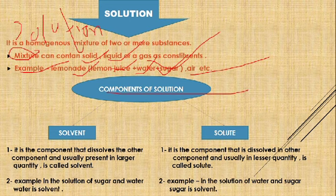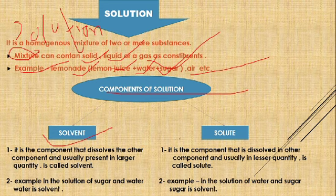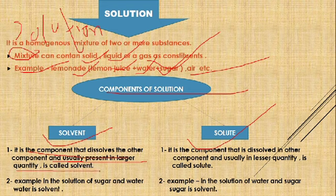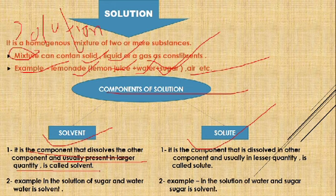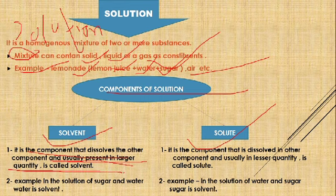The components of a solution are solvent and solute. The solvent is the component that dissolves the other component. For example, in a solution of water and salt, water is the solvent and salt is the solute. The solvent is usually present in the larger quantity in the solution.